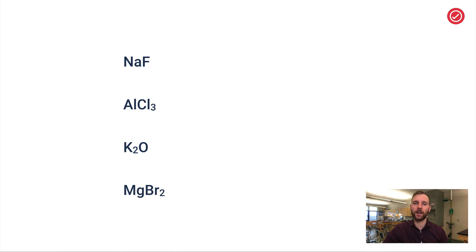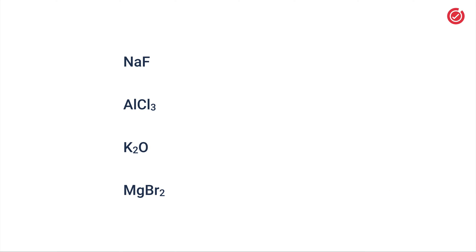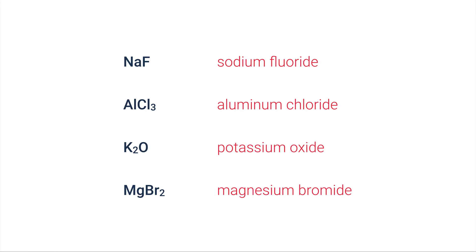Try some of these on your own — pause the video, write these down or type them up, however you do it. Here are the answers: NaF is sodium fluoride, AlCl3 is aluminum chloride, K2O is potassium oxide, and MgBr2 is magnesium bromide.